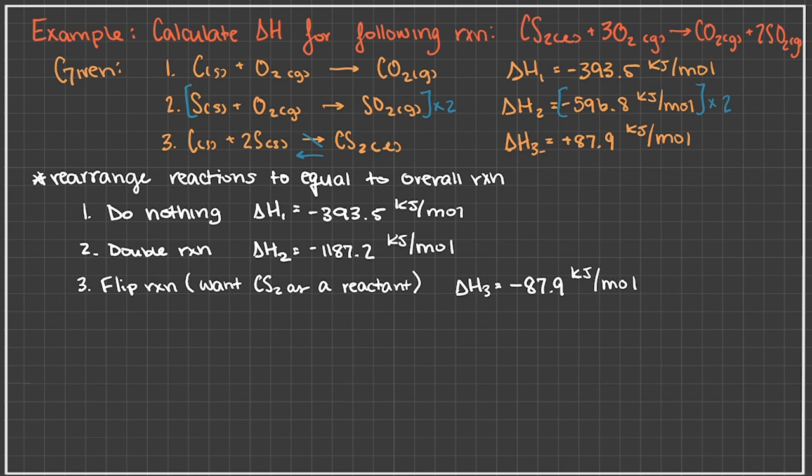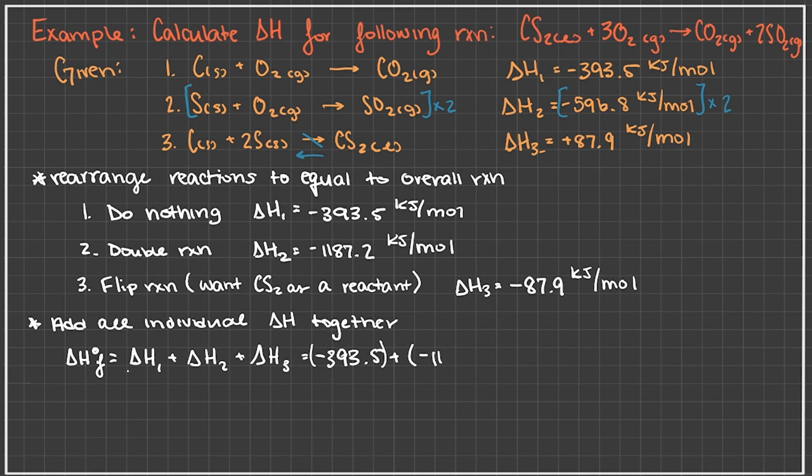Now the next and the last step is going to be to add all of our individual delta H together. So our delta H of formation is going to be delta H1 plus delta H2 plus delta H3 and that is going to be negative 393.5 plus negative 1187.2 plus negative 87.9, and our total amount of heat needed is going to be negative 1668.6 kilojoules per mole.